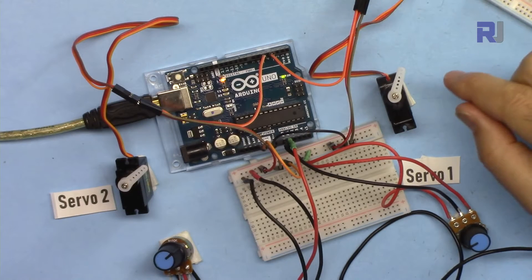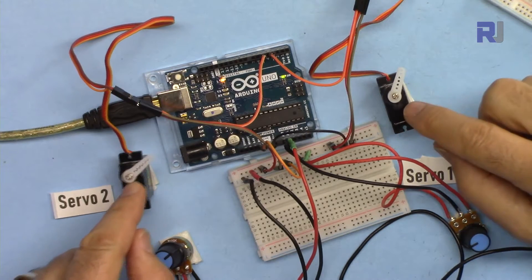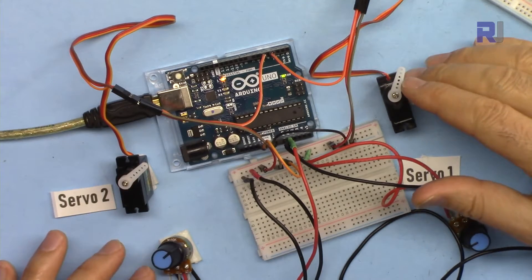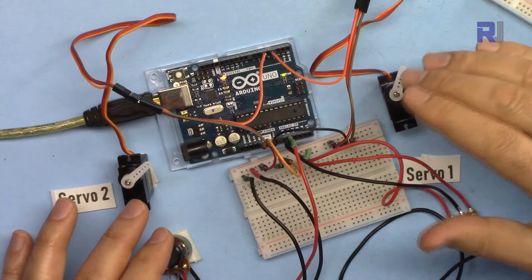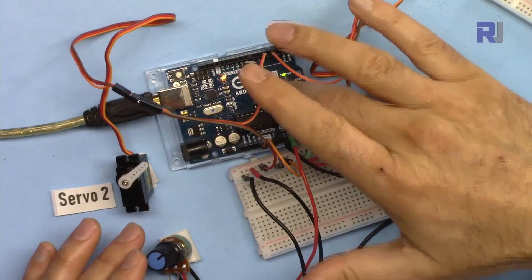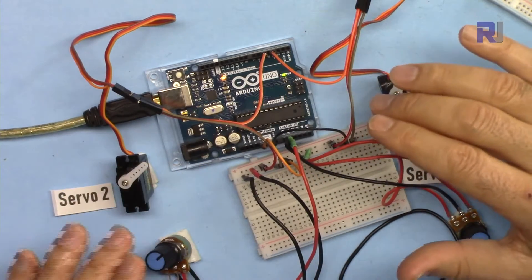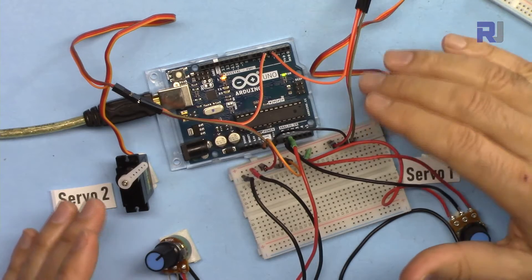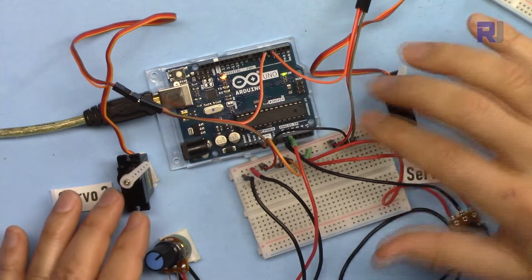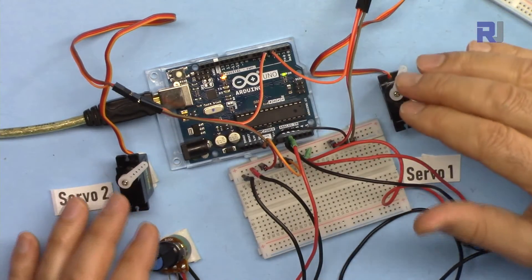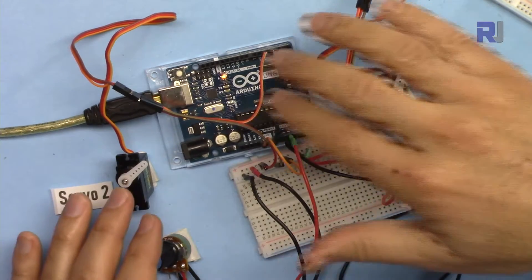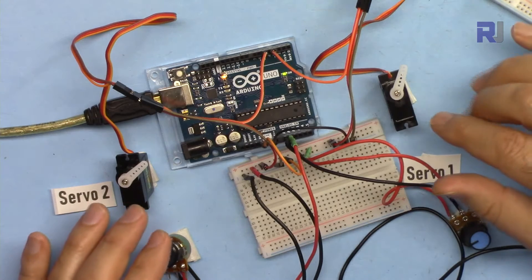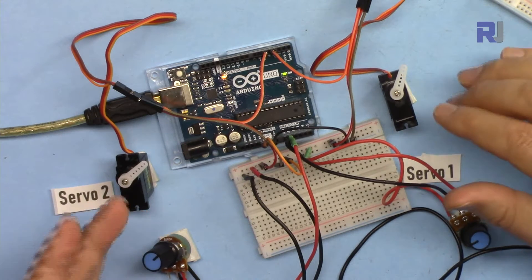I've seen comments under the video asking to control more than one servo motor so here I'm going to show you how to control two or up to six servo motors with Arduino Uno and of course with Arduino Mega you can do more. This is just a simple example and you can apply the same principle. You can control as much as the analog input of your Arduino will allow.